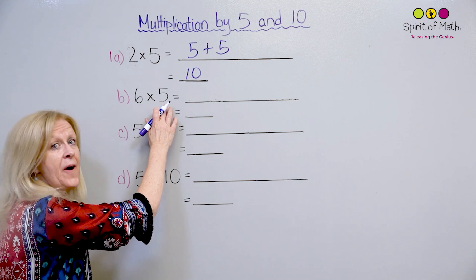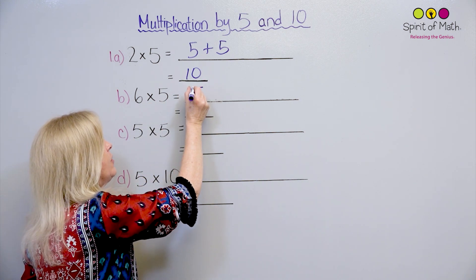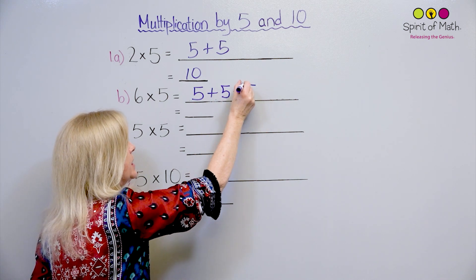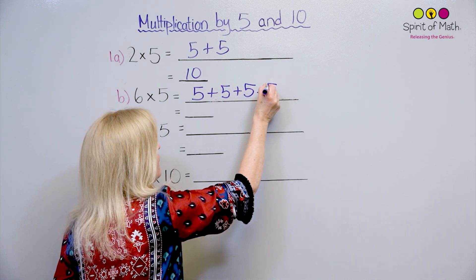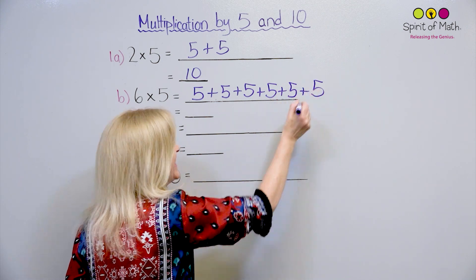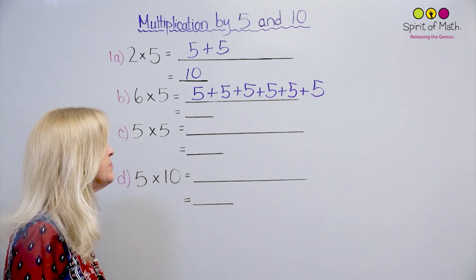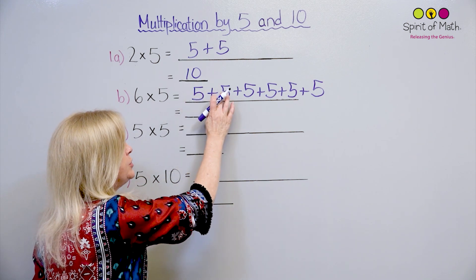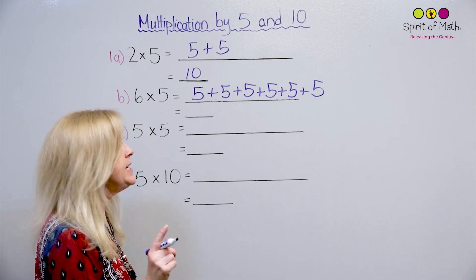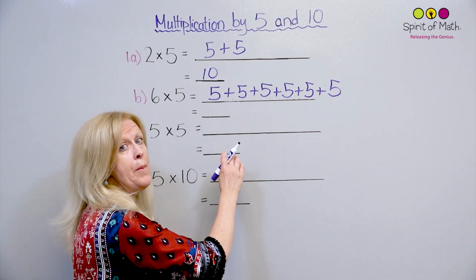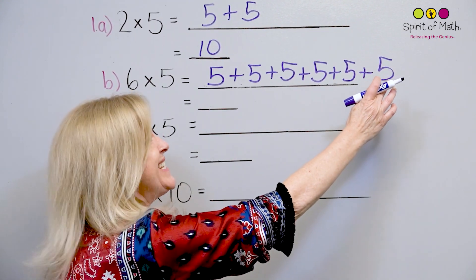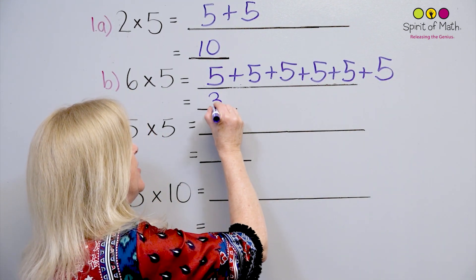Next one says 6 groups of 5. So you write it out as 5 plus 5, six times: 1, 2, 3, 4, 5, 6. Always good to double check. And now what you do is skip count by 5s: 5, 10, 15, 20, 25, and 30. And there's your answer.